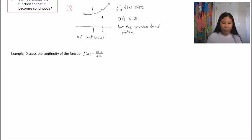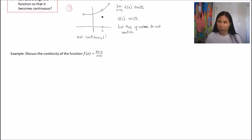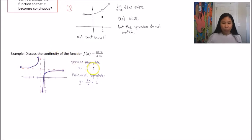For an example, let's discuss the continuity of f(x) = (2x + 1) / (x + 1). This is a rational function. Looking at the denominator, x can't equal negative one because plugging in negative one would mean dividing by zero — that's not allowed. So we know there's a vertical asymptote there. There's also a horizontal asymptote because the degrees on top and bottom are the same; you divide the leading coefficients, giving y equals 2 as the horizontal asymptote.